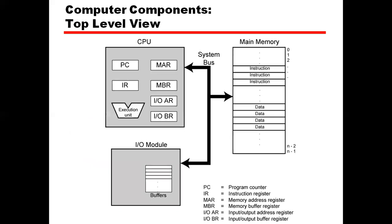Computer components at the top level — we covered this in chapter one. The CPU has different registers. The program counter holds the address of the next instruction to be executed. So what does the program counter do? It holds the address of the next instruction to be executed.